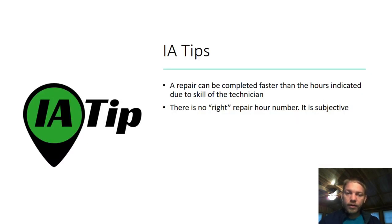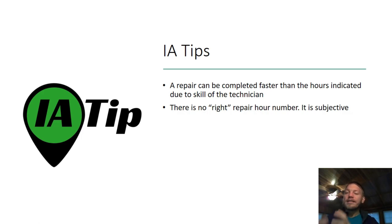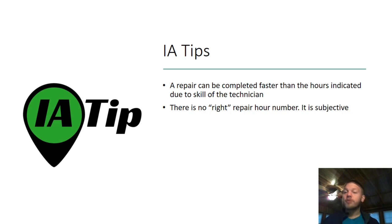Here's a quick IA tip: a repair can be completed faster than the hours indicated due to the skill of the technician. If you tell someone they have one hour to repair that fender and they do it in half an hour, they still get paid that hour. It's not actual time worked — you get paid by the task that is predicted to take that amount of time. There's no single correct repair hour number; it is subjective. As a new IA, you don't need to feel pressured — being in the ballpark is what matters.